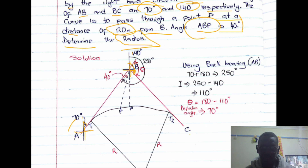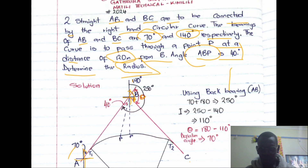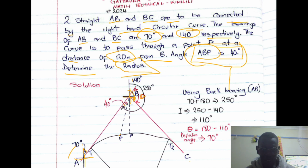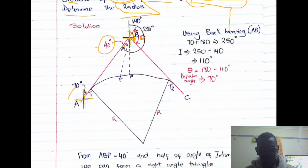The deflection angle is what I'm going to calculate, and the angle of intersection is found from the diagram. We are told that point P is at a distance of 120 meters from B — that is the point of intersection — and the angle ABP is 40°.